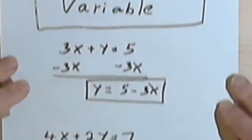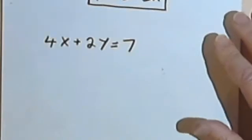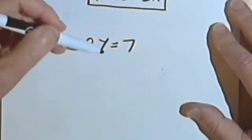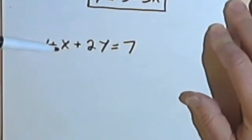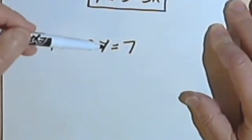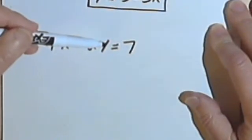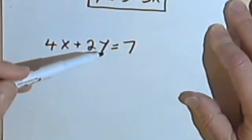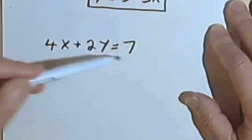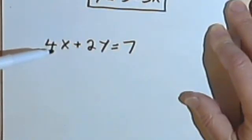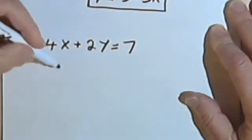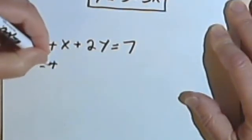Here's another one. So I've got 4x plus 2y equals 7. And once again I'm told to solve this equation for y in terms of x. So I want to get the y by itself. Once again thinking about this as if the 4x was maybe just a 4. If it was just a 4, I would just subtract 4. So what I'm going to do is subtract 4x.